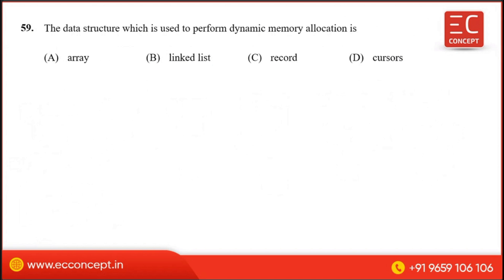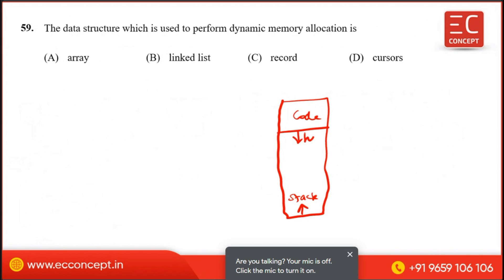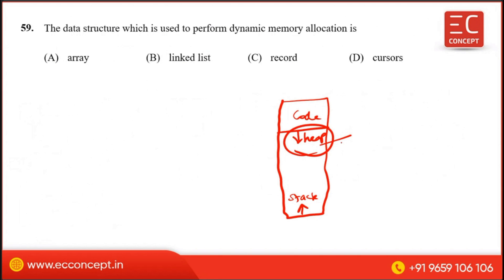The data structure which is used to perform dynamic memory allocation is the heap. The heap is used for dynamic memory allocation. The program, process, and code are in one package. The stack is on the opposite side and grows in the opposite direction. The heap data structure is used for dynamic memory allocation.